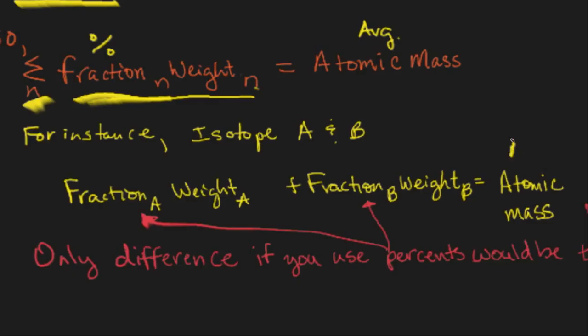For instance, if we have two isotopes, A and B, this could easily be the carbon-12, and this would be the carbon-13. It would be the fraction of carbon-12 always found in nature times the weight, which in this case would be 12, and you would add it to the fraction of carbon-13 times 13, and that would equal the average atomic mass of 12.011 in this case.